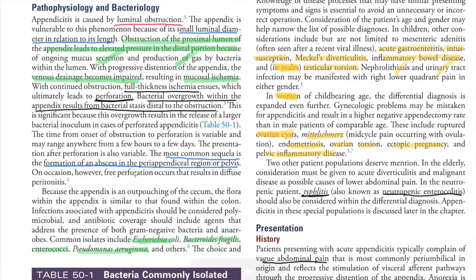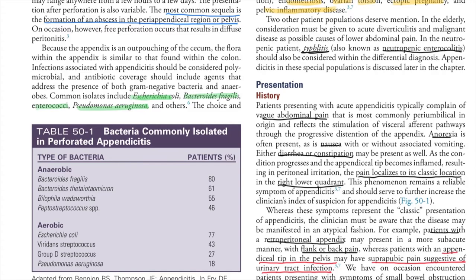Full-thickness ischemia later results in perforation. Bacterial overgrowth within the appendix leads to bacterial stasis, and the most common outcome is the formation of an abscess in the peri-appendicular region or pelvis.